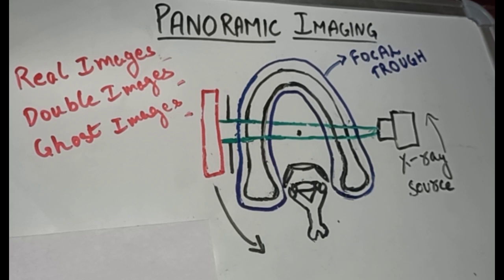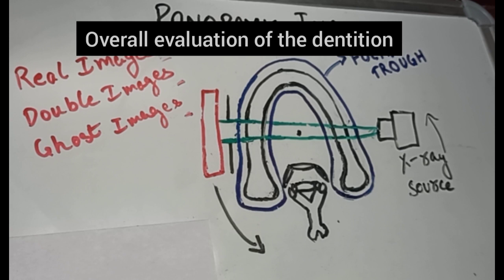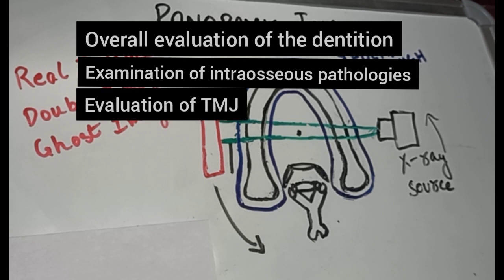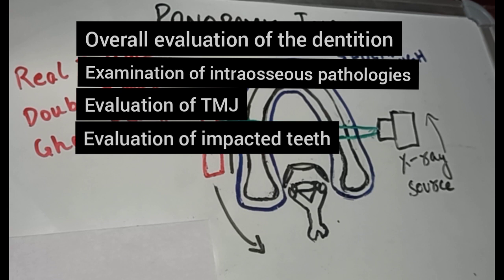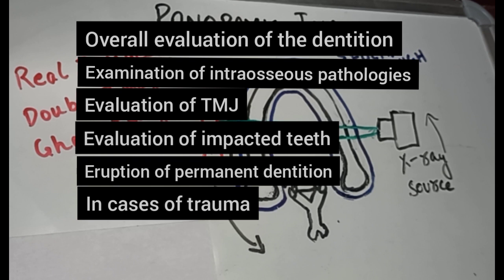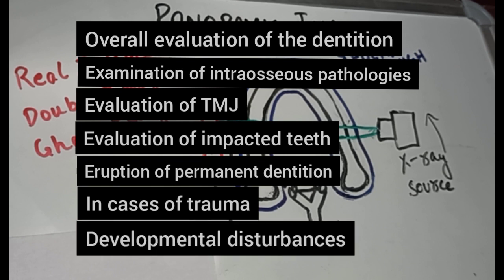Indications for panoramic imaging include: overall evaluation of the dentition, examination for intraosseous pathology such as cysts, tumours, or infections, gross evaluation of the TMJ, evaluation of the position of impacted teeth and eruption of permanent dentition, and cases of trauma and developmental disturbances of the maxillofacial skeleton.